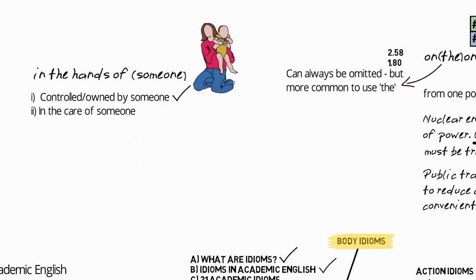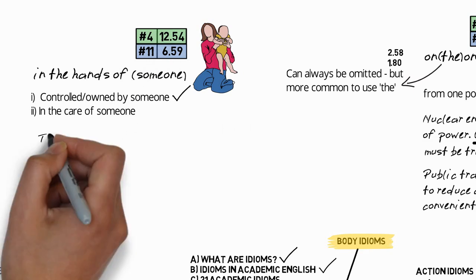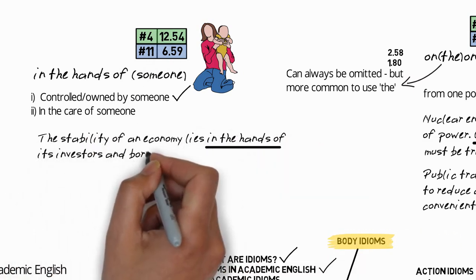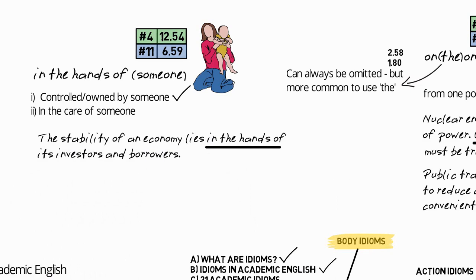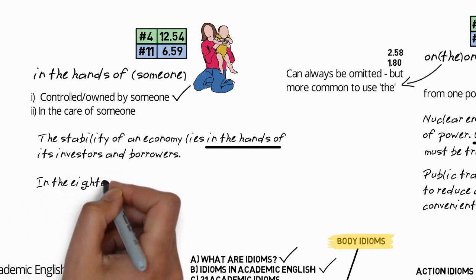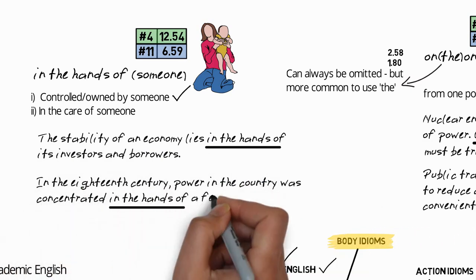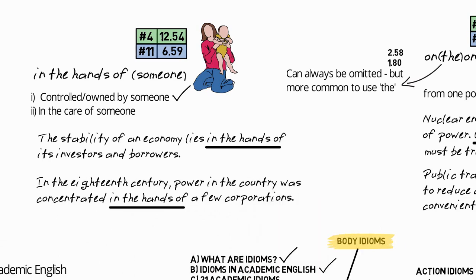So the next idiom is in the hands of someone, and this has two possible meanings: controlled or owned by someone, and in the care of someone. The first meaning is actually more common in academic English, although the picture shows the second meaning. And this is quite a common idiom, the fourth most common idiom in academic English writing. So an example: the stability of an economy lies in the hands of its investors and borrowers.